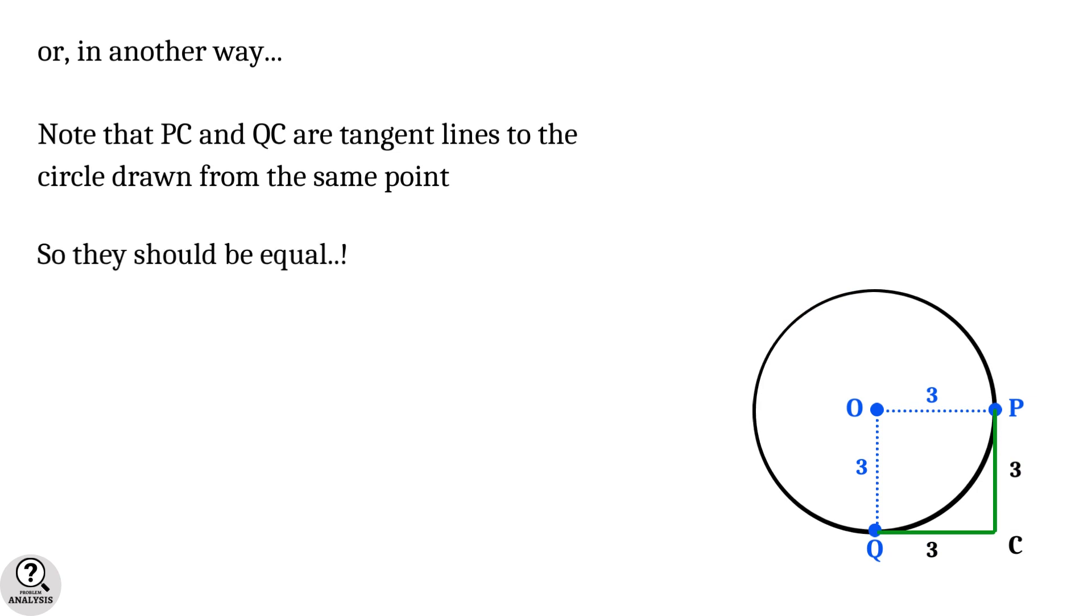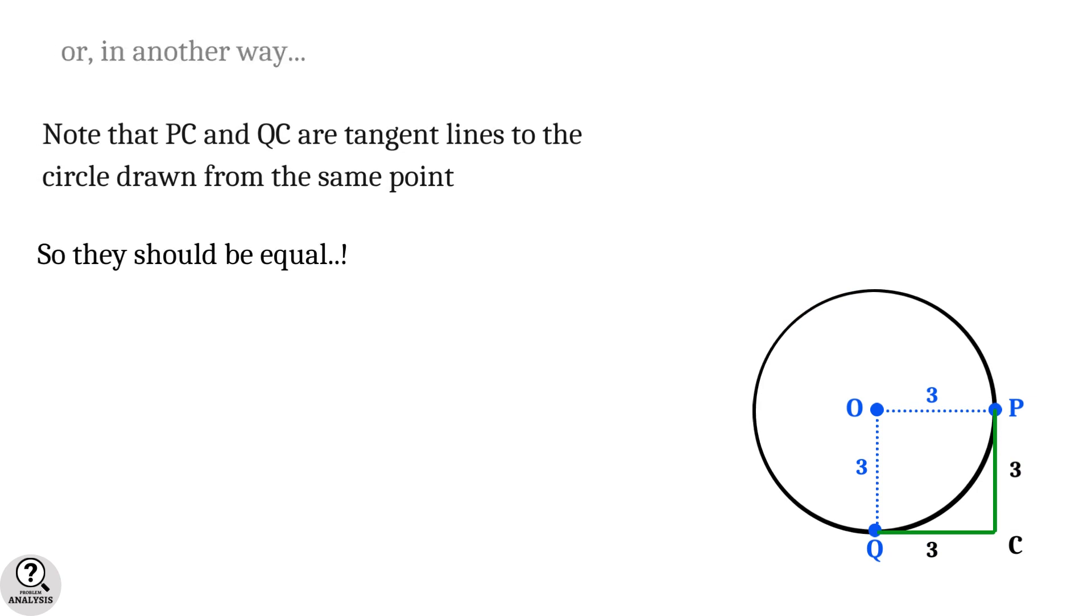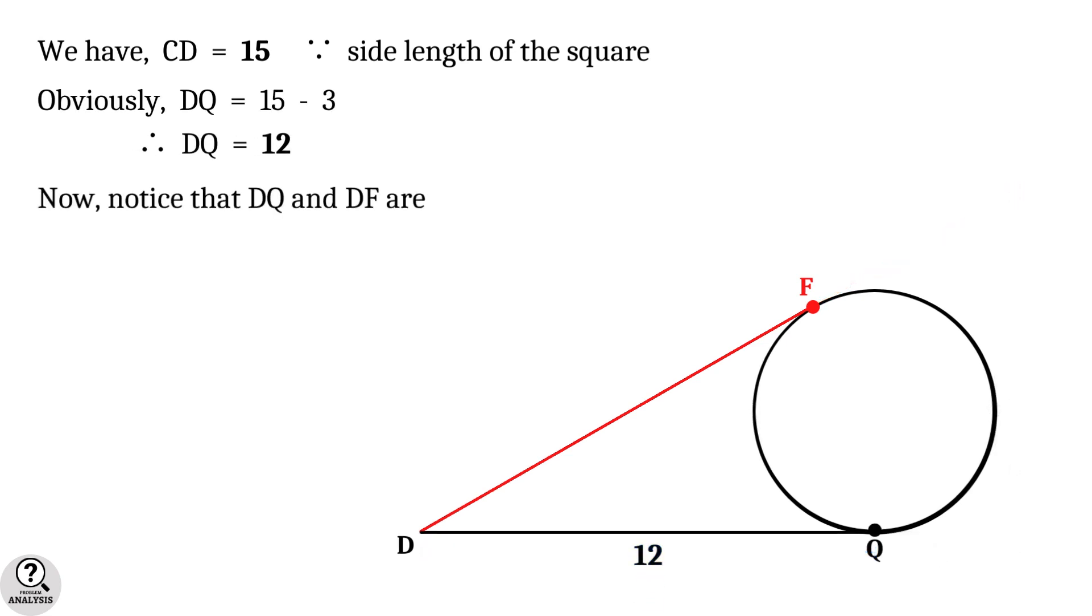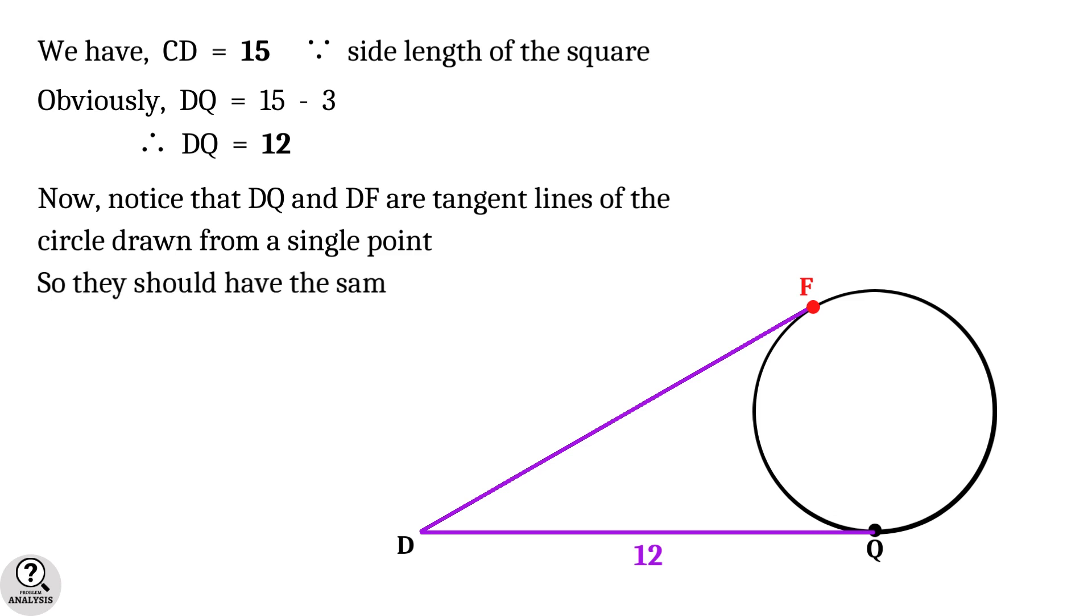Now we already have the side CD equal to 15 units that implies DQ equal to 15 minus 3 equal to 12 units. Now observe the lines DQ and DF. They are a pair of tangent lines of the circle drawn from a single point which means they are equal in length.